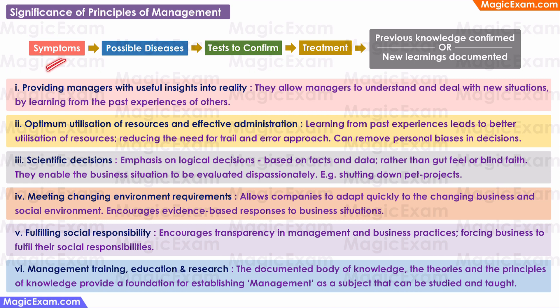Suppose a patient goes to a doctor with some symptoms that the doctor has not seen earlier. The patient has a high fever, the patient is turning yellow, and the patient has some pain in the stomach area. Other doctors who have seen similar symptoms in the past will have documented that if a patient is showing all of these symptoms, it must be jaundice. By referring to the experiences of other doctors, this doctor can quickly understand that this is probably a case of jaundice and can ask the patient to undergo some tests to confirm the diagnosis and provide treatment.